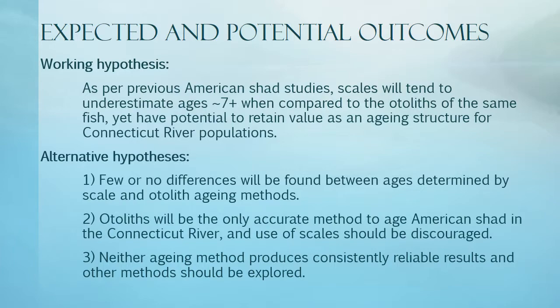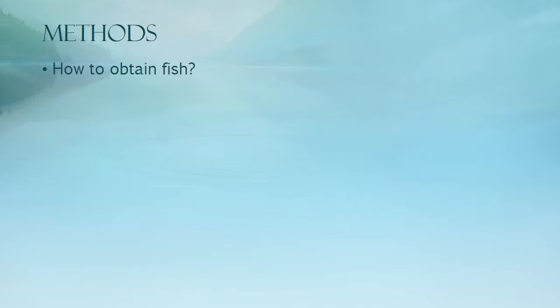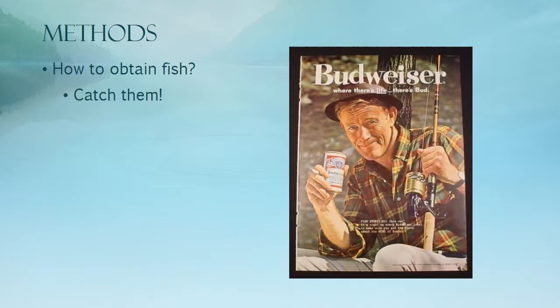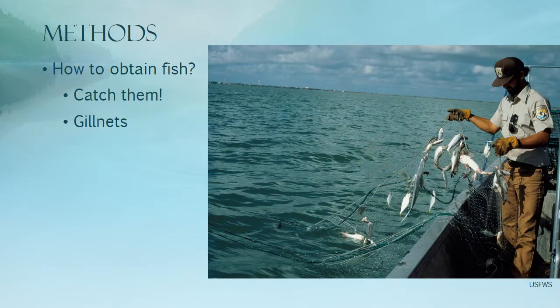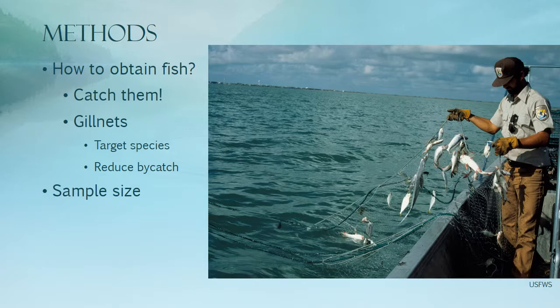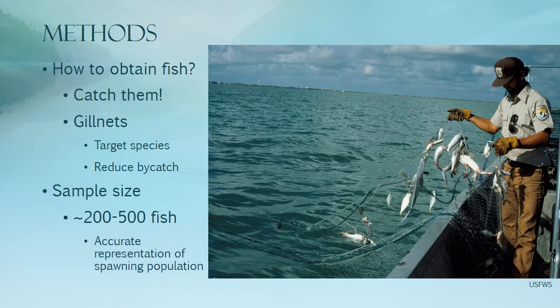So how will this project work? First, we're going to need some fish. Gill nets are large walls of nylon netting hung at the desired depth — probably about 7 meters. Gill nets can be targeted for specific species through mesh size, which reduces bycatch. For American Shad, mesh size will be about 14 centimeters when stretched. The nets allow only the heads of the fish to fit through; when they try to back out, their gills and operculum become entangled. Between 200 and 500 fish should provide an accurate representation of the river's spawning population. All fish must be numbered, measured, weighed, and sexed carefully so we can compare each structure for the same fish.